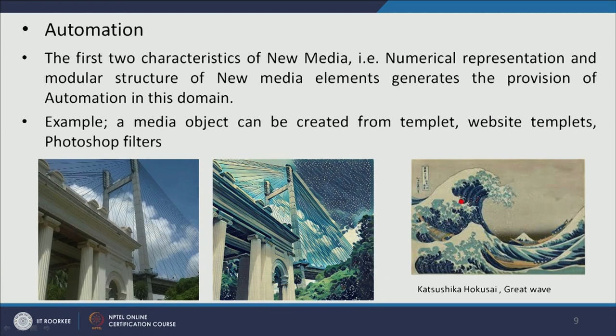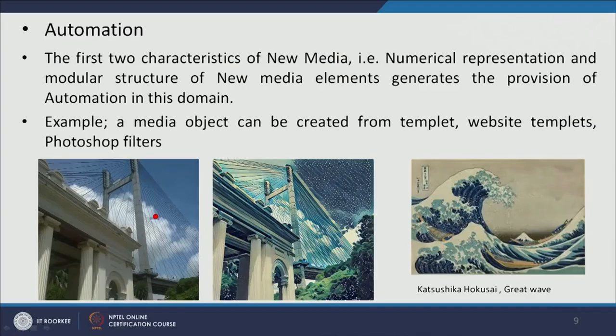The color of the original photograph is different, but when the filter derived from Hokusai's Great Wave is applied, the color is changed to reflect the Great Wave's color palette. The line qualities seen in the wave are also repeated to depict the cloud in the image. By this, elements of design are transformed and merged with the image through the principle of automation — only possible because new media stores images as mathematical numbers in a modular format, and a previously coded algorithm derived from the painting can be applied to another image.